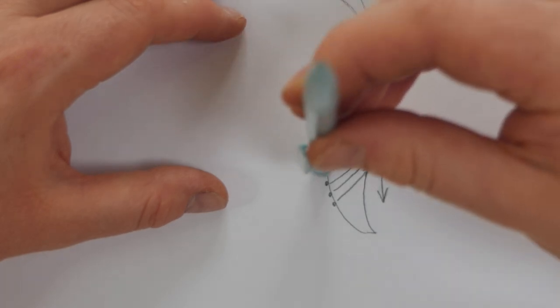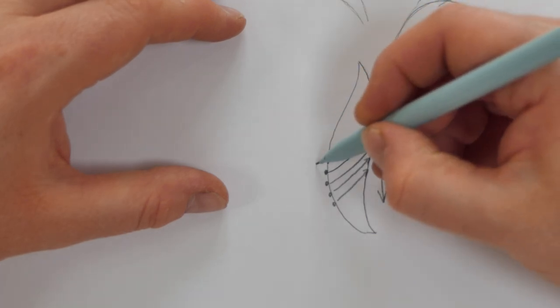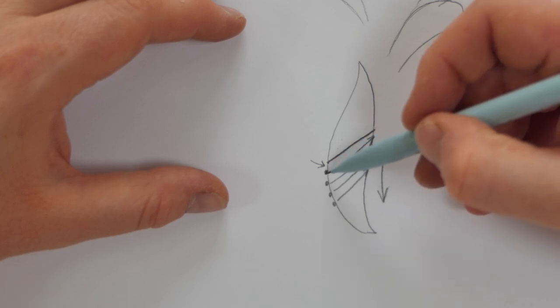The needle comes up straight, pointing towards the sky like a rocket, and we leave this very important little breathing space between the tip of the previous stitch and where the needle's emerging to make the next stitch.